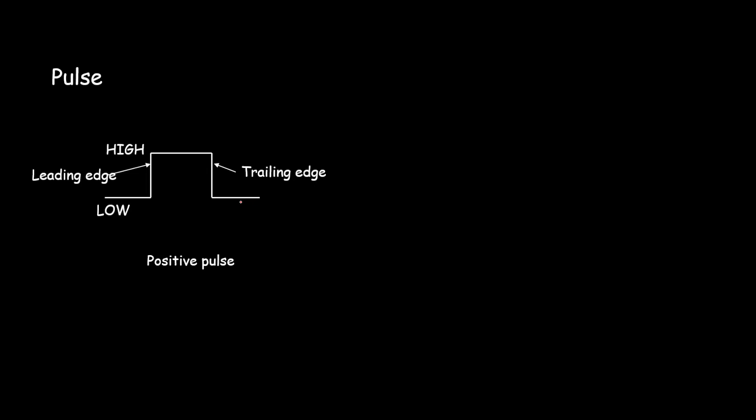We also have a negative pulse wherein the voltage goes from the normal high level to low level and back to the high level. You will notice there are two edges here: one is the leading edge, another is the trailing edge.